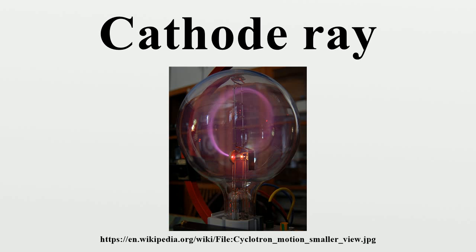After the 1654 invention of the vacuum pump by Otto von Guericke, physicists began to experiment with passing high-voltage electricity through rarefied air. In 1705, it was noted that electrostatic generator sparks travel a longer distance through low-pressure air than through atmospheric pressure air. In 1838, Michael Faraday passed a current through a rarefied air-filled glass tube and noticed a strange light arc with its beginning at the cathode and its end at the anode. In 1857, German physicist Heinrich Geissler sucked even more air out with an improved pump, to a pressure of around 10⁻³ atmospheres, and found that instead of a dark space, a glow filled the tube.